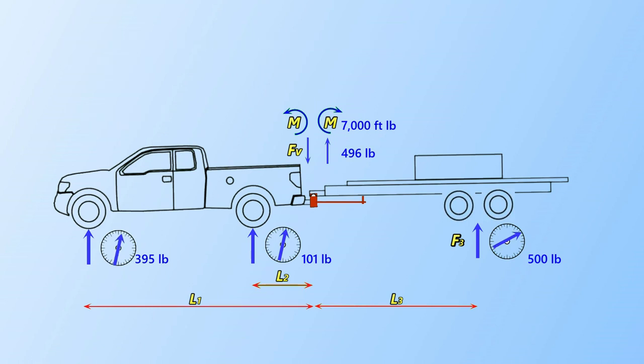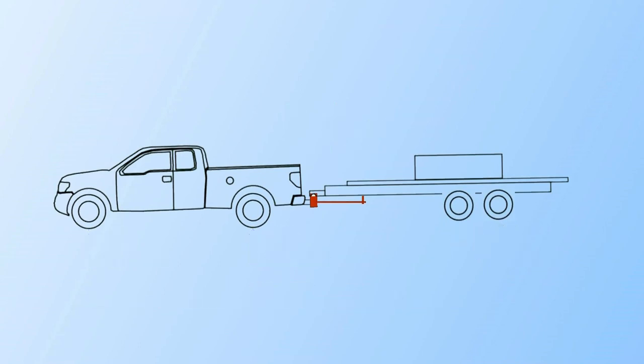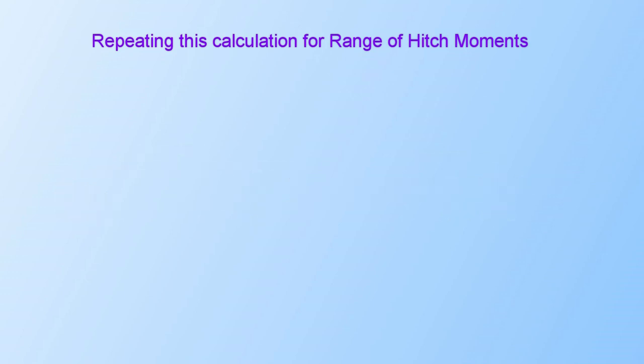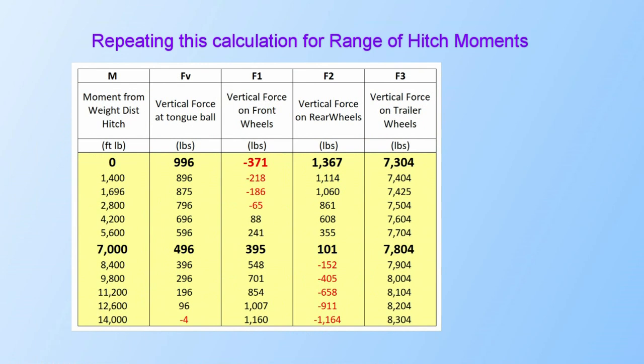Recall F sub V and M are not independent variables. They are related to each other as shown in the trailer example and must be used as a set. We can repeat these calculations for a range of moments or weight distribution system settings and arrive at this table.